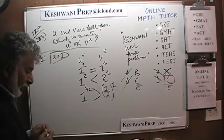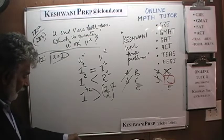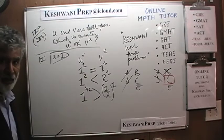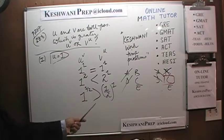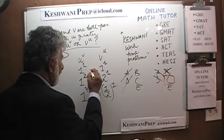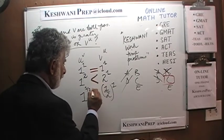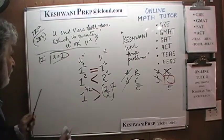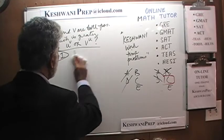We only need two conflicting scenarios to show insufficiency. We can show equal, greater than, or less than with three scenarios. The first statement by itself is not enough — we established that.